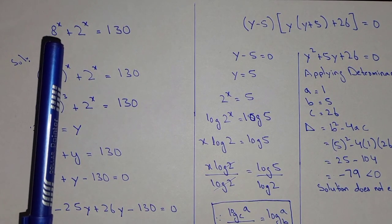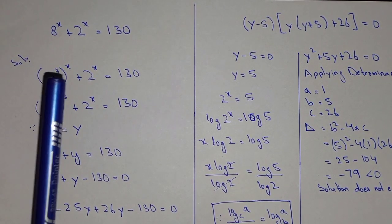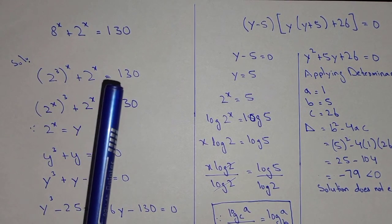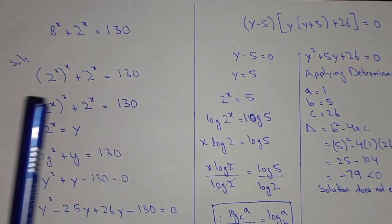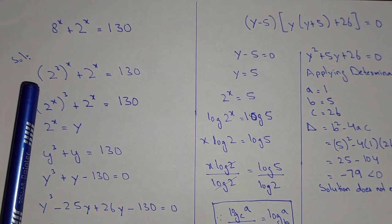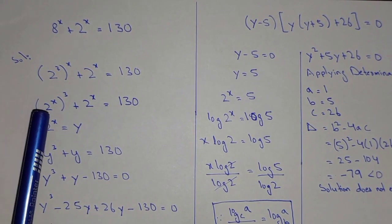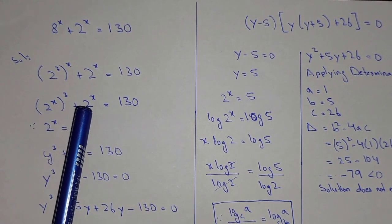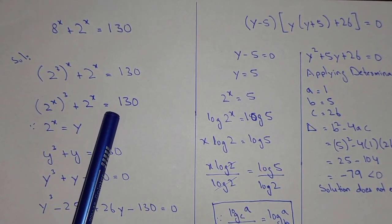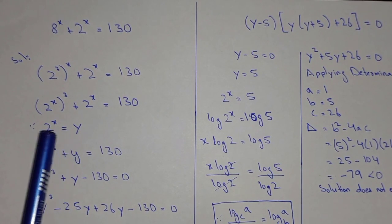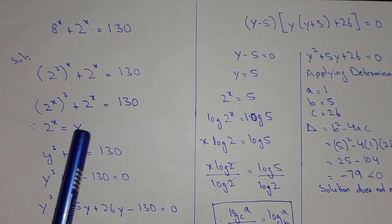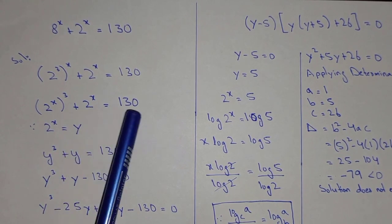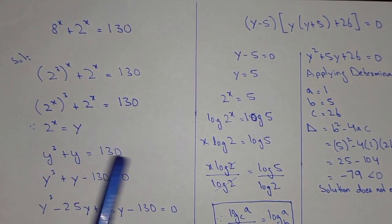We know that 8 is equal to 2 to the power 3. So 2 power 3, whole power x, plus 2 power x equals 130. So 2 cube power x can be written as 2x whole power 3. Now let's substitute, keeping 2 power x equal to y.